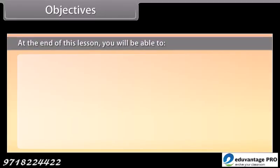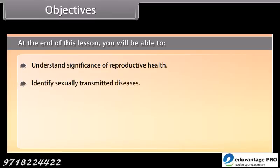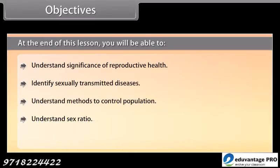At the end of this lesson, you will be able to: understand the significance of reproductive health, identify sexually transmitted diseases, understand methods to control population, understand sex ratio, and identify population size.